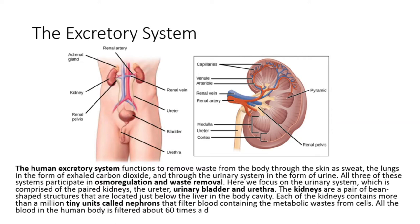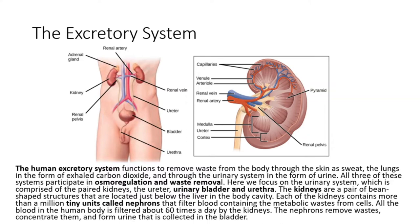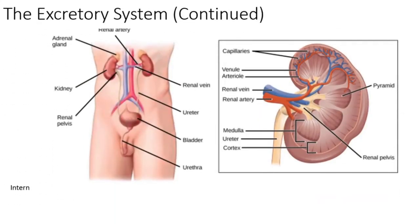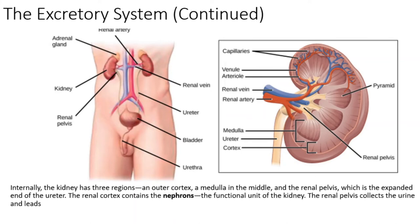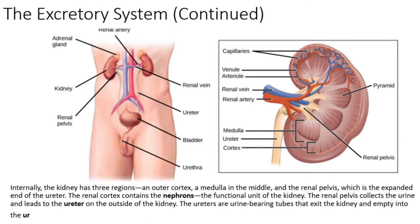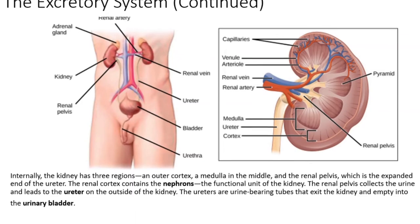All the blood in the human body is filtered about 60 times a day by the kidneys. The nephrons remove wastes, concentrate them, and form urine that is collected in the bladder. Internally, the kidney has three regions: an outer cortex, a medulla in the middle, and the renal pelvis, which is the expanded end of the ureter. The renal cortex contains the nephrons, the functional unit of the kidney. The renal pelvis collects the urine and leads to the ureter on the outside of the kidney. The ureters are urine-bearing tubes that exit the kidney and empty into the urinary bladder.